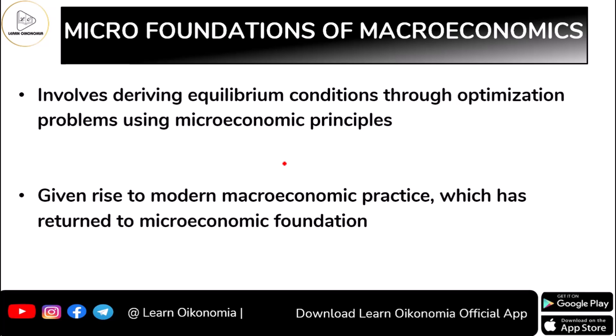When we say micro foundations of macroeconomics, it deals with understanding or deriving equilibrium conditions. How do we attain equilibrium? We know that when demand is equal to supply, we have an equilibrium. Corresponding to the point where the demand curve intersects the supply curve, you have an equilibrium price and equilibrium quantity. The demand-supply equilibrium condition is attained through optimization problems, and this is mainly used with respect to microeconomic principles.